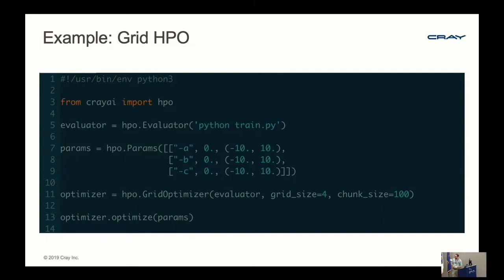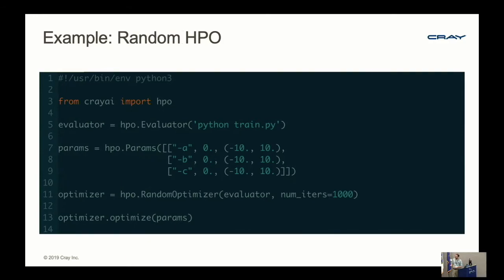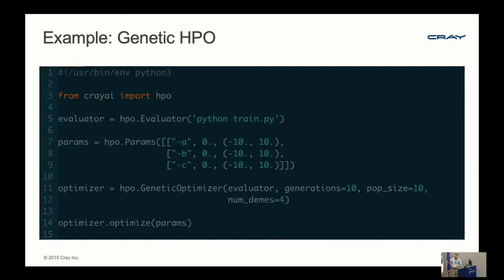For random search, the only difference is using the random optimizer with a number of iterations parameter—here we specify a thousand iterations randomly sampling hyperparameters. For the genetic optimizer, you can set number of generations—here we do 10 generations with a population size of 10 and four demes. A deme is a local population that helps avoid getting your entire population stuck in a local minimum. You can start demes in different locations, let them evolve separately, with occasional migration between them. This would evaluate 40 individuals per generation.